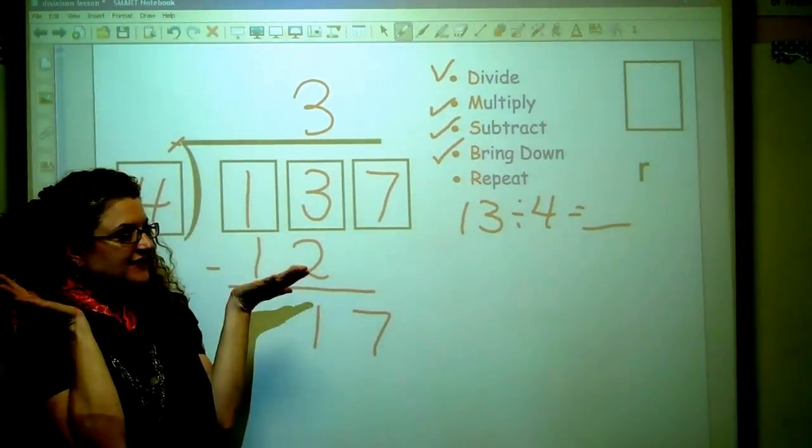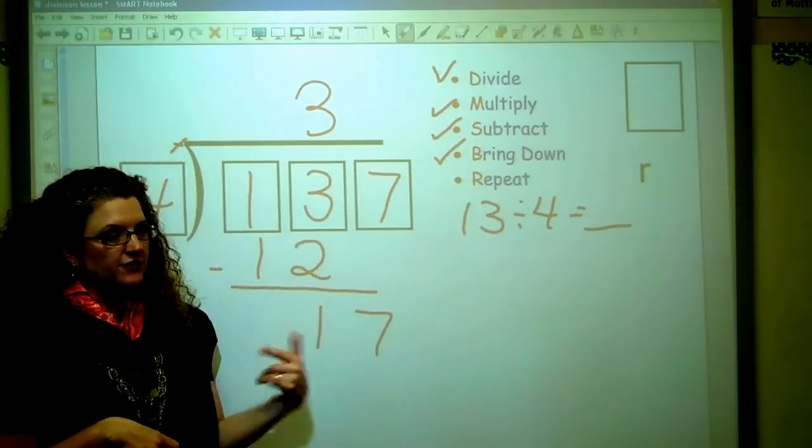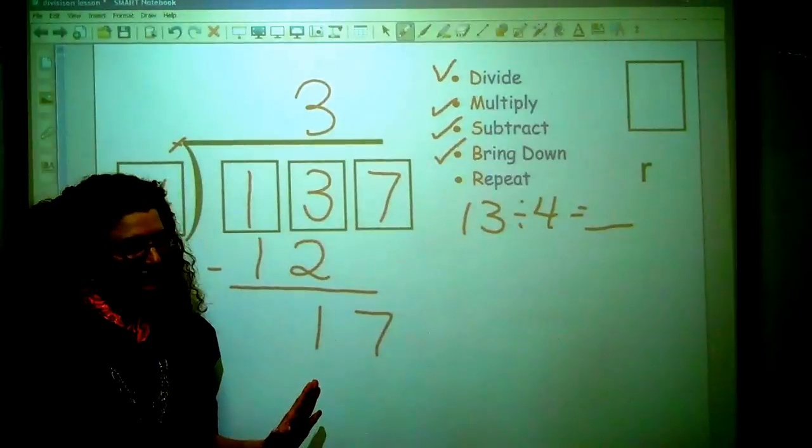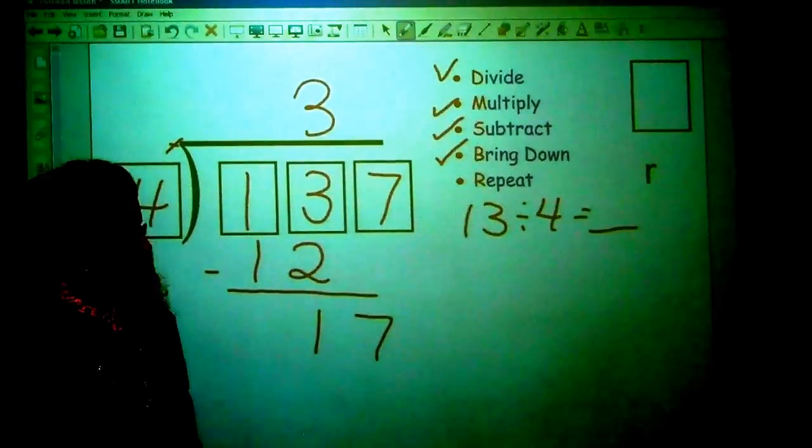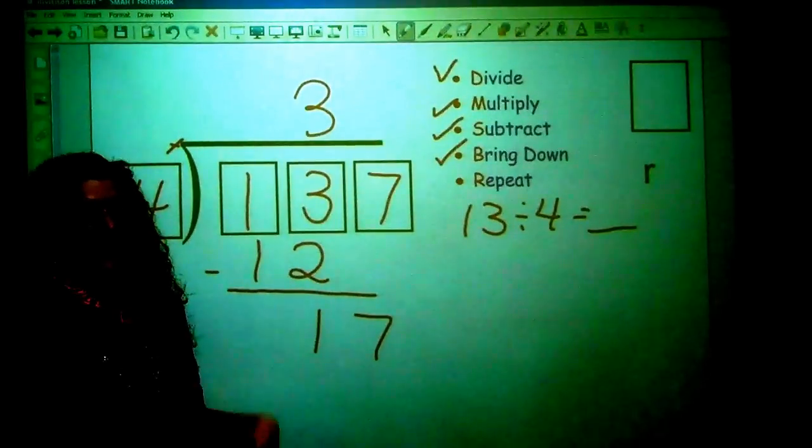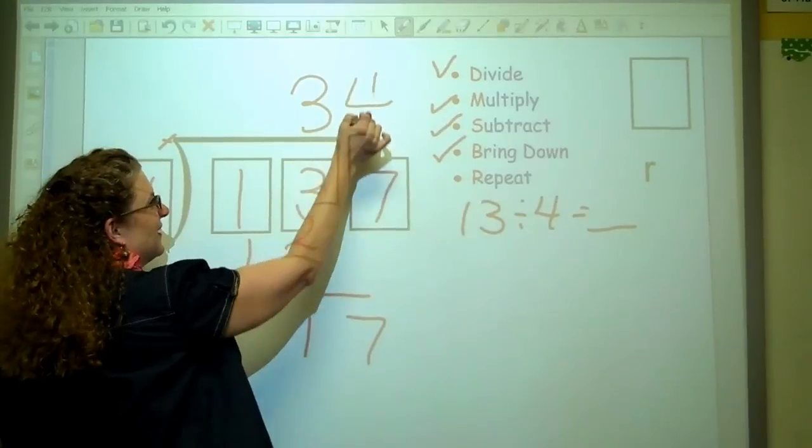Okay. So I've got 17 dividing into 4 equal groups. And I think in my brain, what times 4 is close to 17 but does not go over? And because I know my multiplication facts really well, I say, oh, that is 4, right? Because 16 is the answer to that. That's where I was getting at. Okay. So we'll say 4.